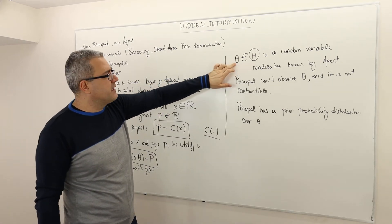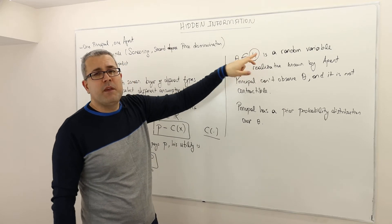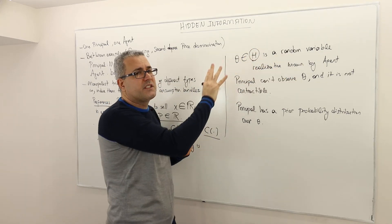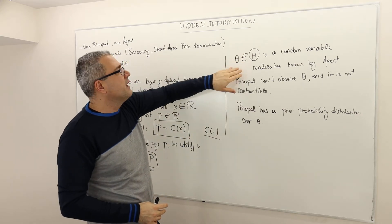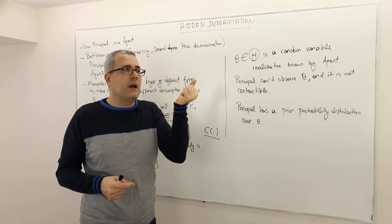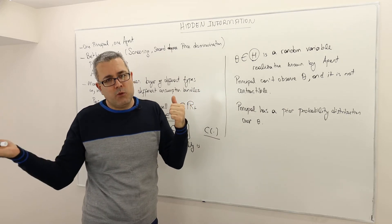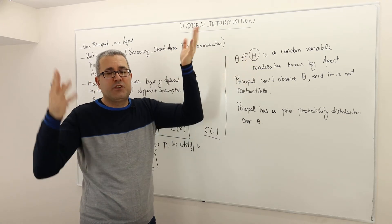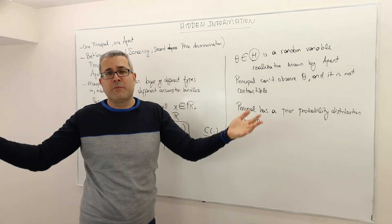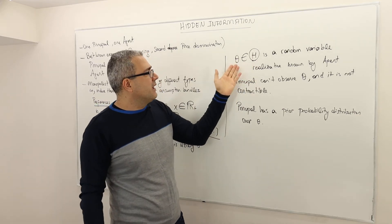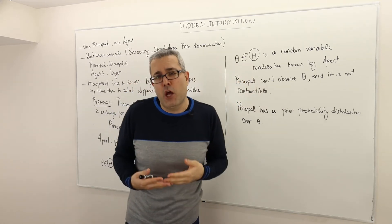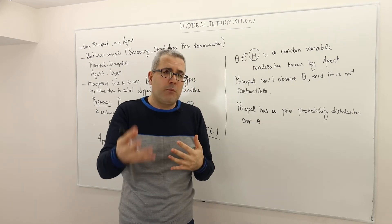Here we assume that the theta, the type of the agent, is coming from some mother space, capital theta. Think of it this way: it's a random variable. If you're seeing this notation for the very first time, don't be confused. The type is coming from some space. It could be two types: a customer with low willingness to pay or a customer with high willingness to pay. So this set basically has two types. Or it could be a continuous distribution. Your willingness to pay can be distributed over some interval. So what we assume is that theta is a random variable and its realization is only observed by the agent. So the agent knows how much he values this good, but the monopolist cannot observe this.